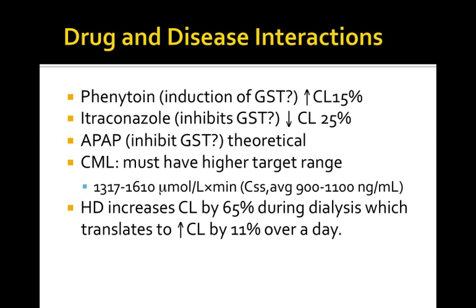Drug and disease interactions with busulfan: Phenytoin is thought to induce the enzyme that clears it, increasing clearance by about 15%. Itraconazole is thought to inhibit the enzyme, decreasing clearance by about 25%. Acetaminophen (APAP) may also inhibit GST — a theoretical concern with no reported cases yet. For CML treatment, a higher target range than bone marrow transplant is required. Hemodialysis increases clearance by 65% during the session, which translates to an 11% increase in clearance over a full day.